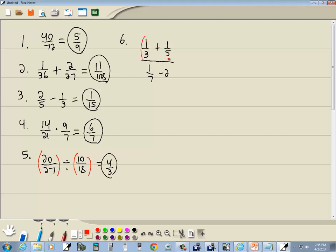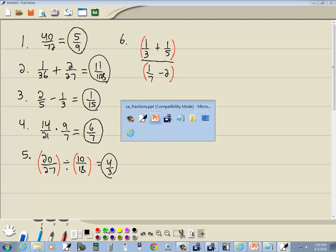So, up on top here, we have more than a single number or a single variable, so I put parentheses around it. On the bottom, we have more than a single number or a single variable, so I put parentheses around it. Now, other than that, you just kind of enter it as you see it.